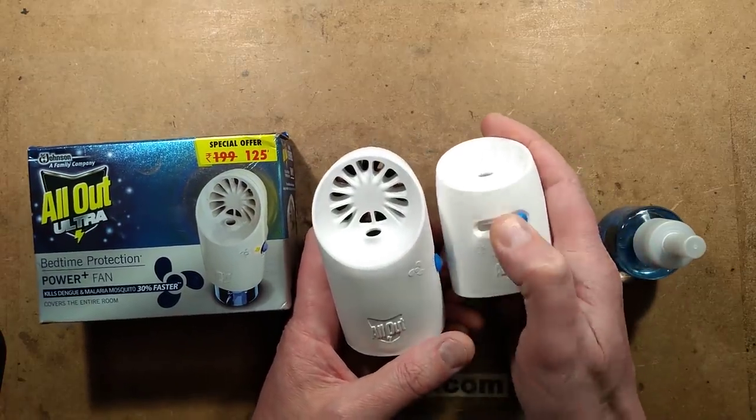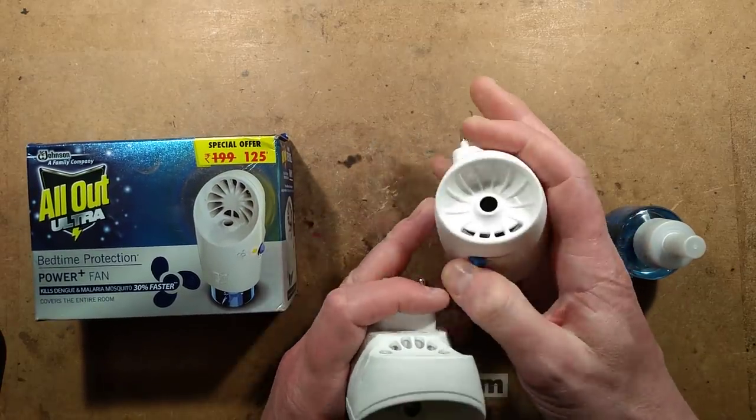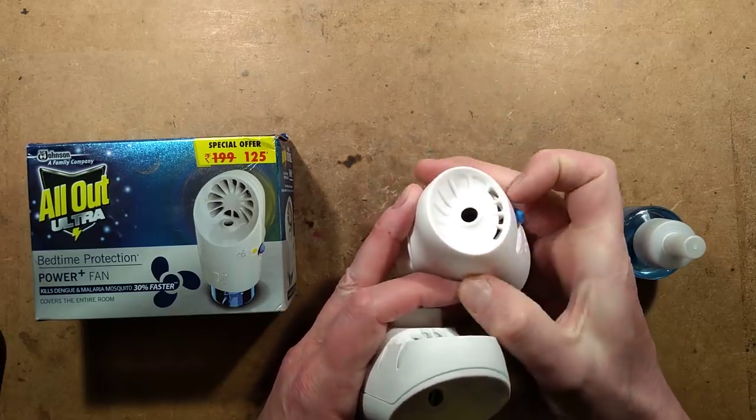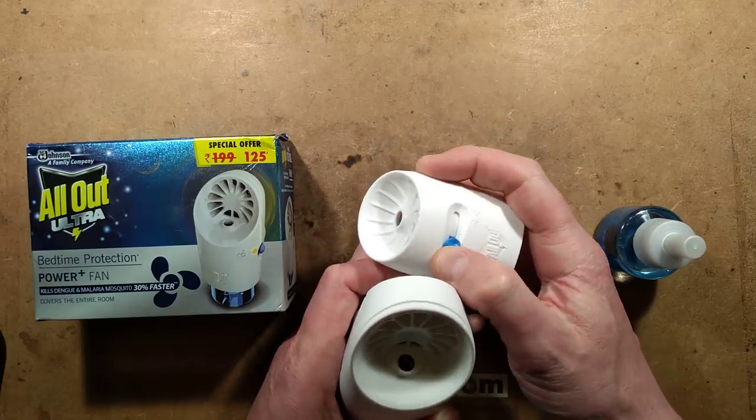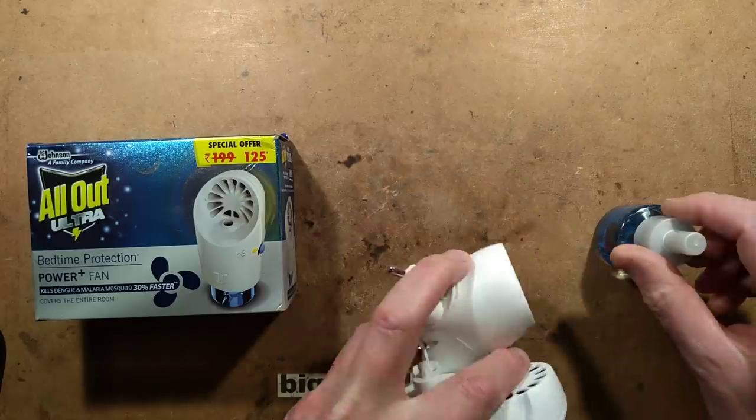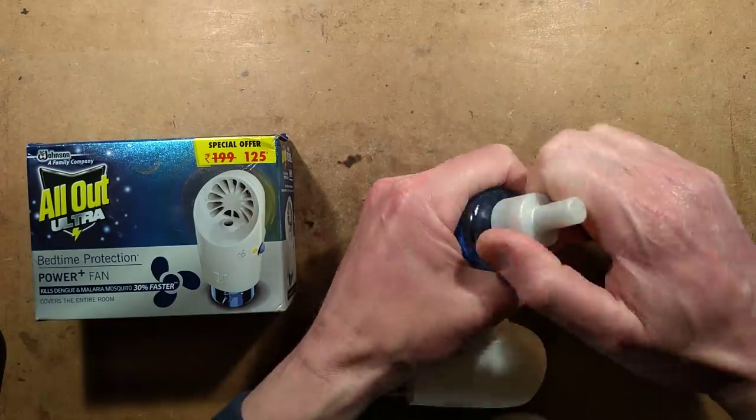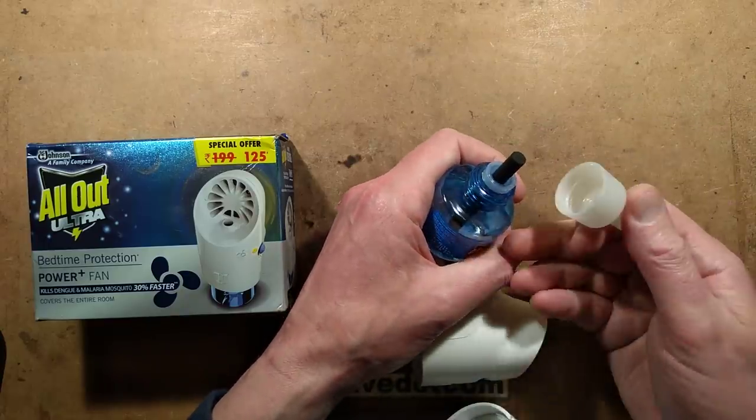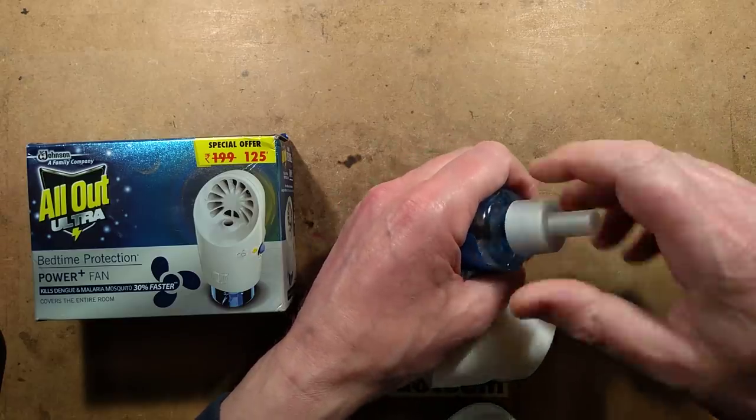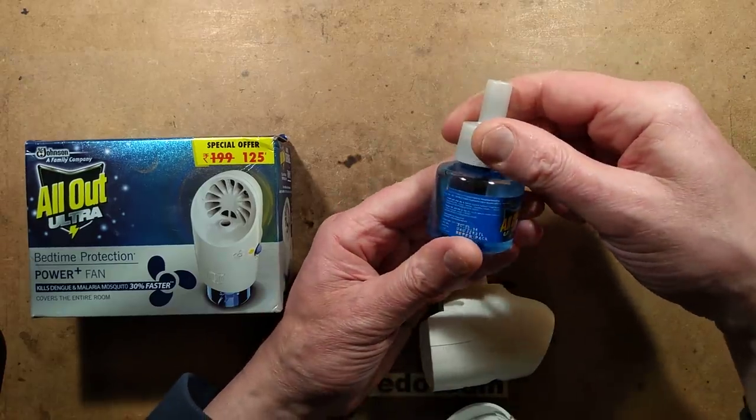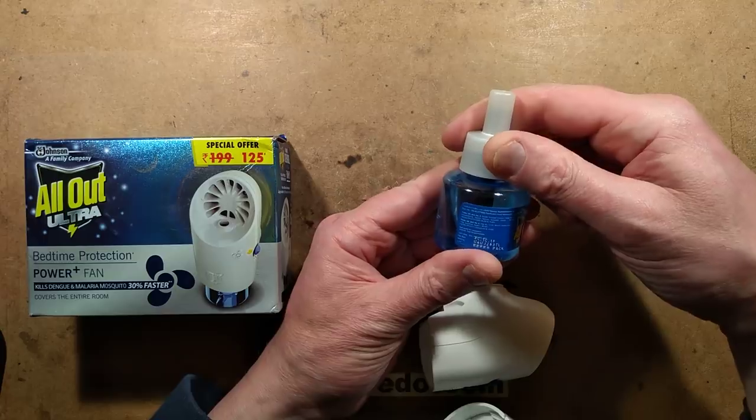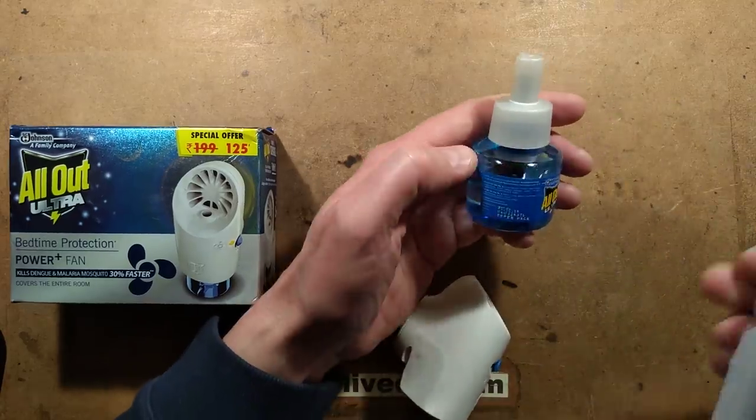Here's the simple all out that just has the variable lever. When you move the variable lever, you can see the heater block sliding up and down inside. As you turn this up, it slides down further over the wick of the repellent stuff, the mosquito killer, which I think is transfluthrin based. I should have checked that out.